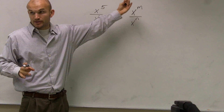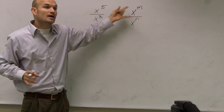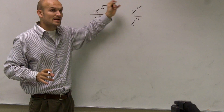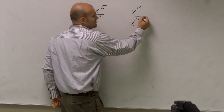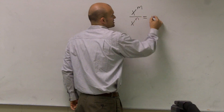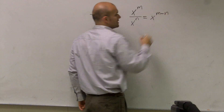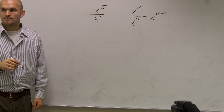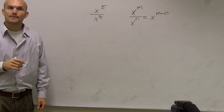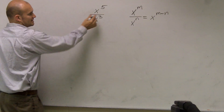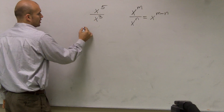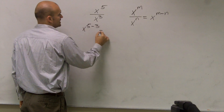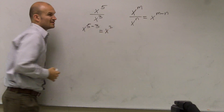An exponent has a base and an exponent. As long as my bases are the same and they're raised to an exponent, when I'm dividing them to simplify this, all I need to do is subtract the exponents. So to get this answer, all it really is is x to the fifth minus three equals x squared.